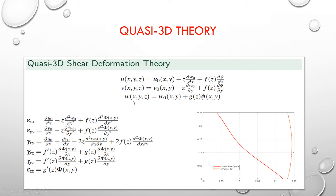What is different is that w(x,y,z), the transverse displacement, is a function of w₀(x,y) — the mid-plane x,y function — plus it is also a function of g(z), where g is a function of z. Therefore, along the thickness of the plate it is not constant but it will vary. We can see the variation which would be carried out by the g function.